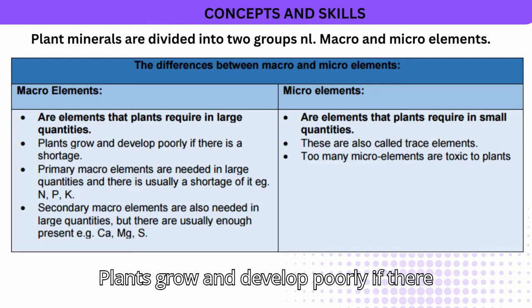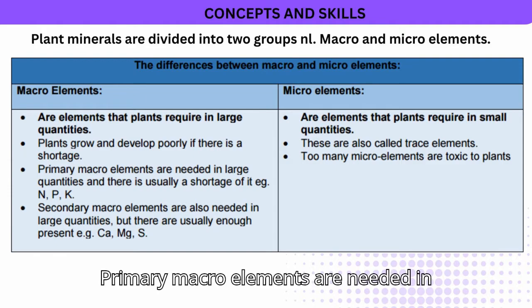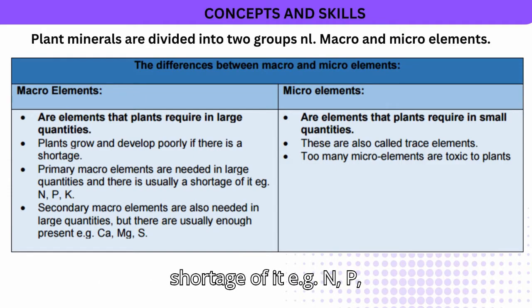Plants grow and develop poorly if there is a shortage. Primary macro elements are needed in large quantities and there is usually a shortage of them.